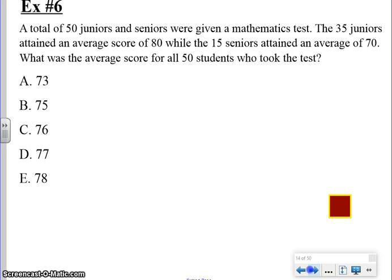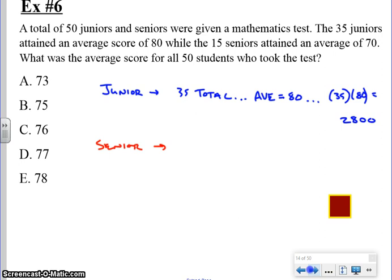As far as the juniors are concerned, we need to understand that there are 35 total juniors, and we said that the average they scored was an 80. What that means is that if we're to take the 35 times the 80, that's going to give us an average of 2,800. Now as far as the senior class goes, we know that there are only 15 total seniors. They scored an average a little bit lower here, their average score was a 70. So now when I take the 15 times 70, their sum is going to be 1,050.